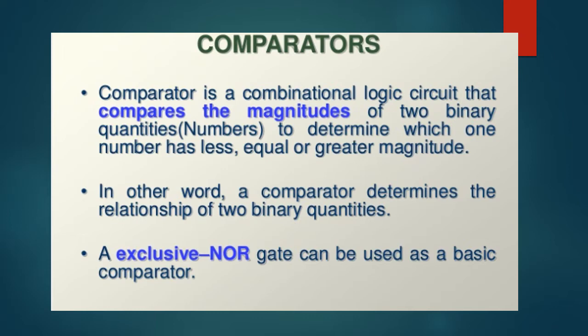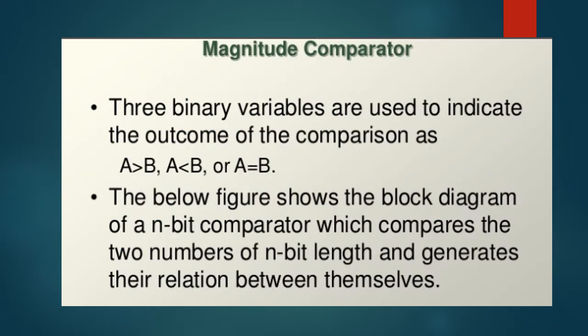An exclusive NOR gate can be used as a basic comparator. In the case of magnitude comparator, three binary variables are used to indicate the outcome of a comparison as A greater than B, A less than B or A equal to B.